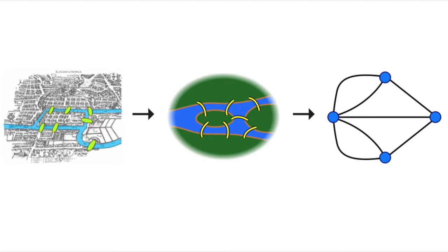Each landmass could be thought of as a point and each bridge a line joining two points. Euler was able to prove that for any arrangement of points and connecting lines, it would be possible to arrive back at the starting point, having traversed every connecting line exactly once, if and only if a certain condition was satisfied. This condition was that either no point along the way had an odd number of connecting lines, or only two points did.